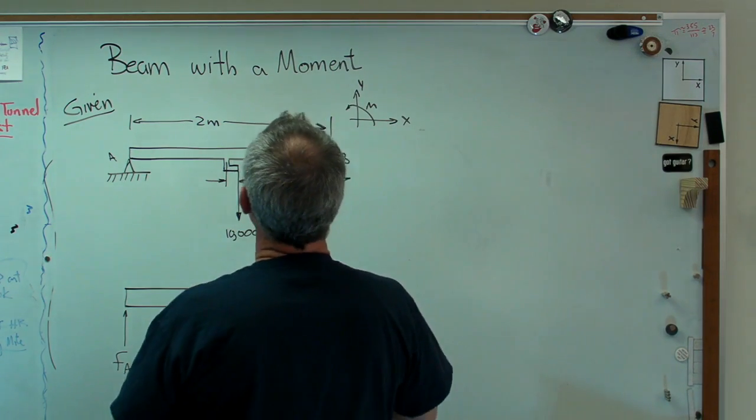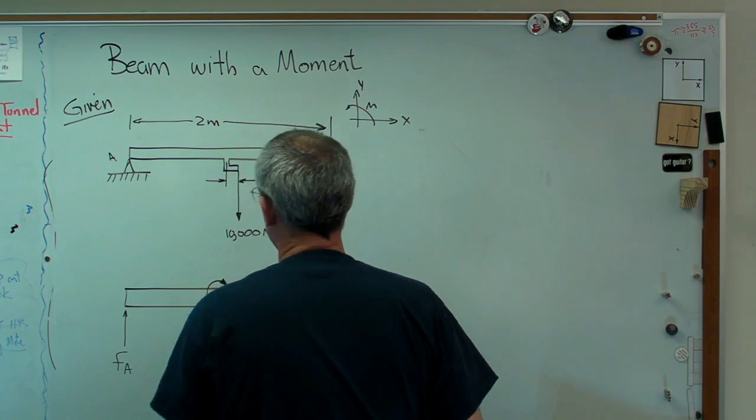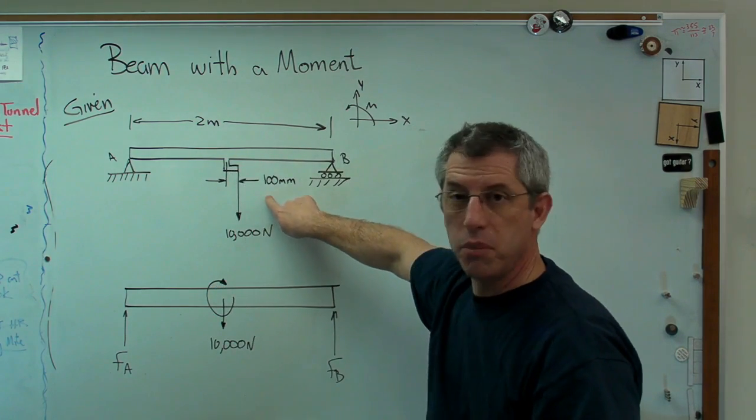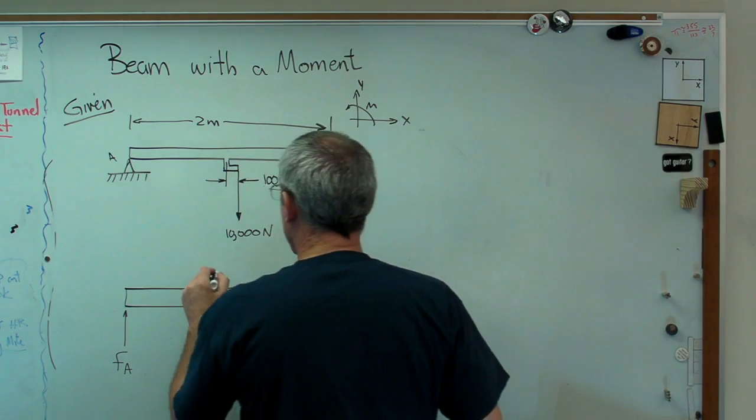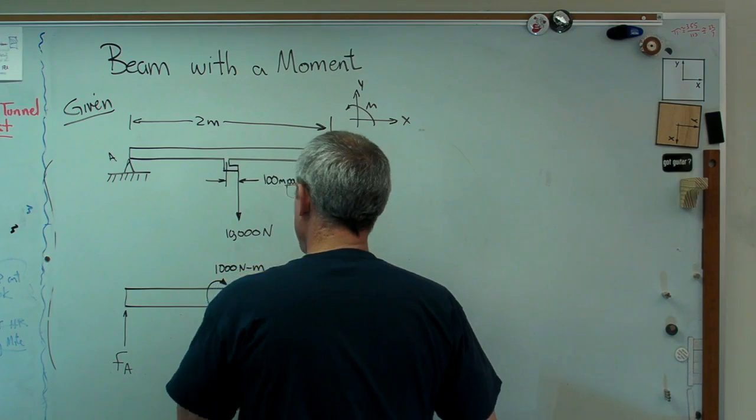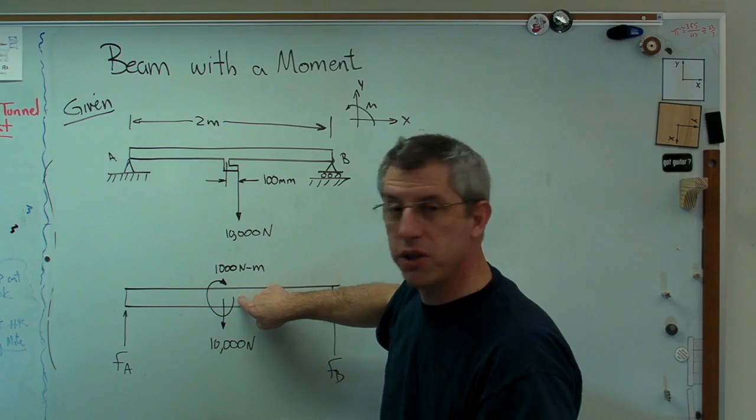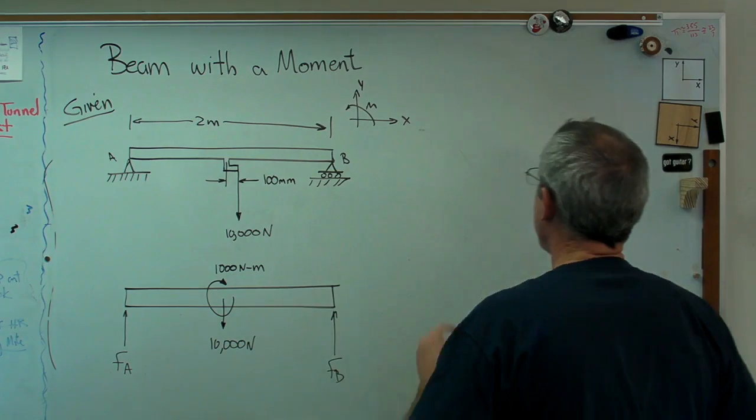Now, this moment's going to go that way, clockwise. That's 10,000 newtons at a 0.1 meter arm. So that's 1,000 newton meters. That and that are now absolutely equivalent, and I'm pretty sure we can solve for F_A and F_B.